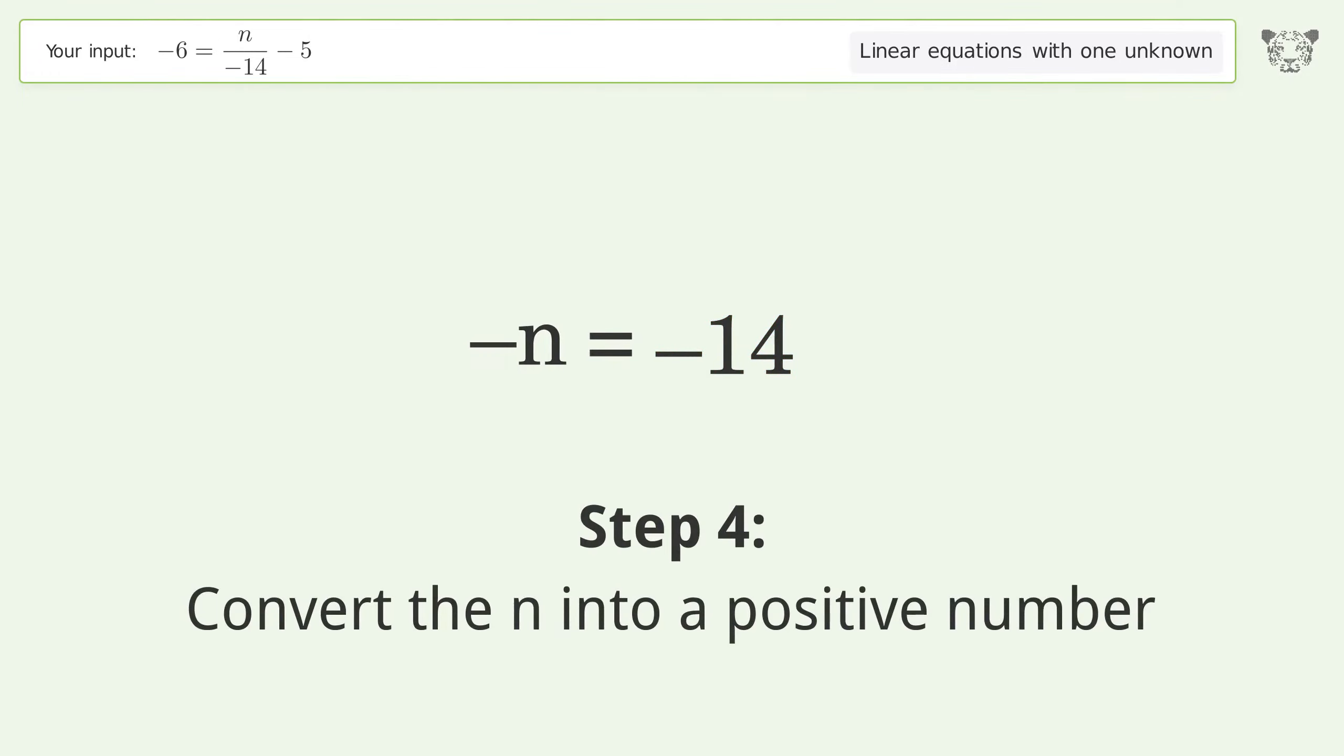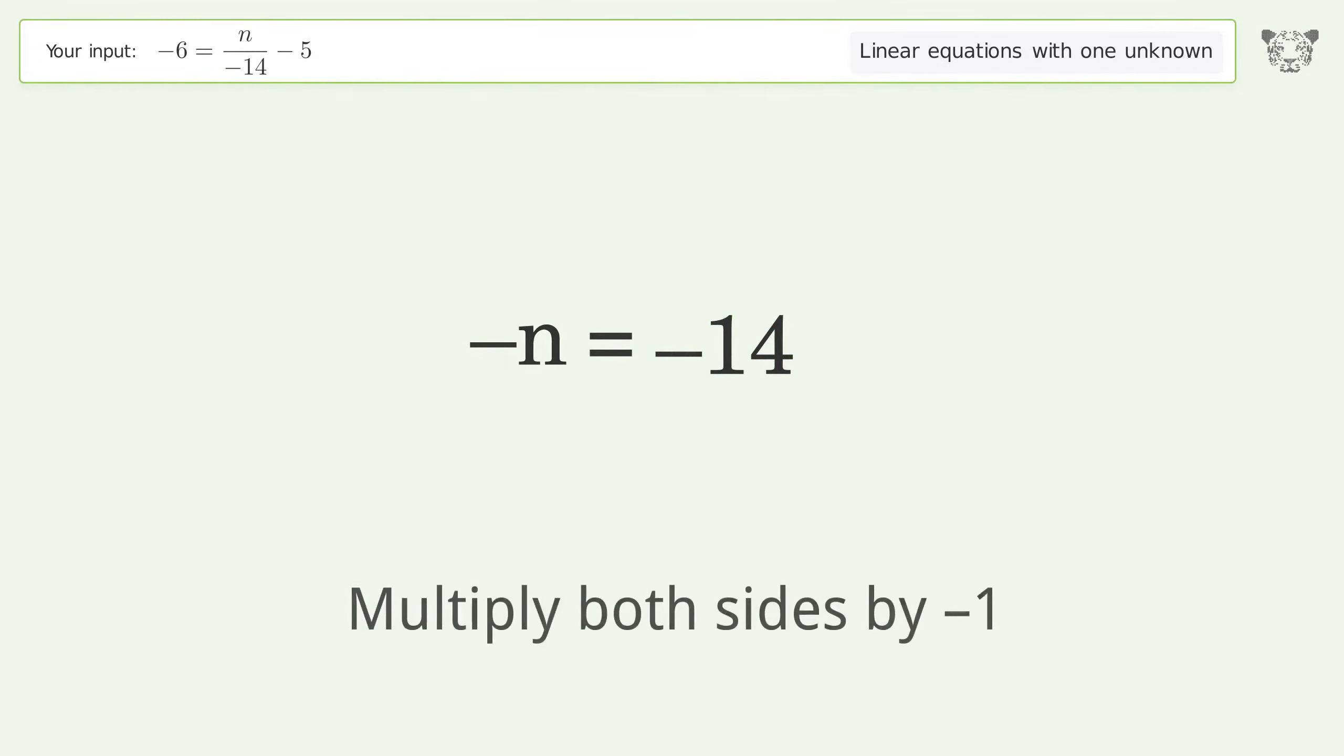Convert the n into a positive number. Multiply both sides by negative 1. Remove the 1s. Simplify the arithmetic.